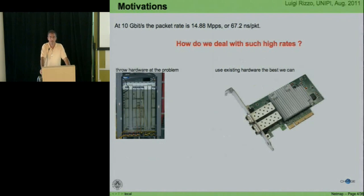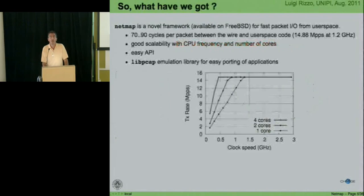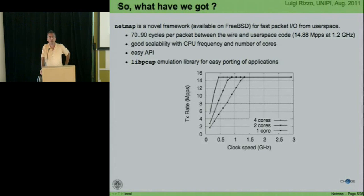Either we put in faster, dedicated hardware to do packet switching, or we try to use the available hardware the best we can. The network cards we have these days are quite powerful. With NetMap, we managed to do line rate — around 15 million packets per second — with just one core running at around 1.2 gigahertz. This is probably more than one order of magnitude faster than using the standard APIs provided by normal operating systems.